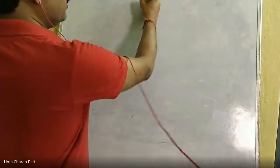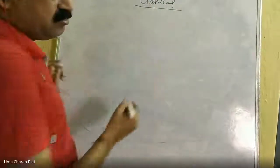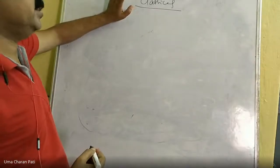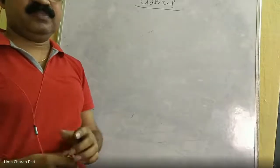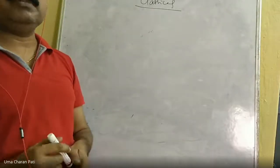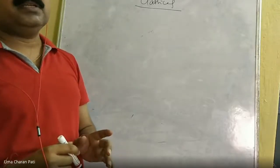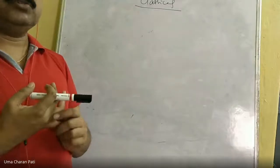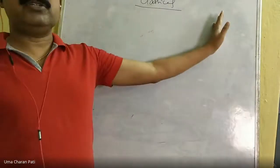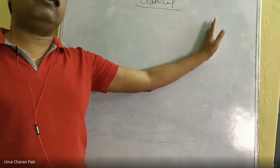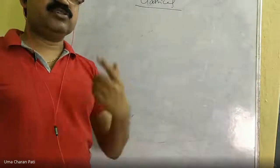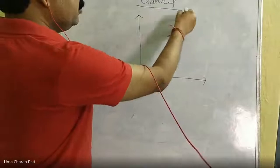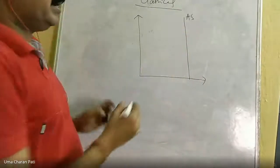Just to remind you: in the classical theory, two to three things are very important. First, there is full employment equilibrium — the classical economists assumed full employment as given. They were primarily microeconomists who kept macroeconomics outside the purview of their study. They took the macro as given — the total output of the economy is given. So the aggregate supply curve in the classical theory is a vertical straight line.